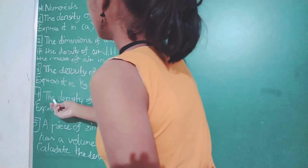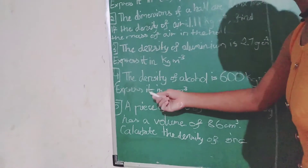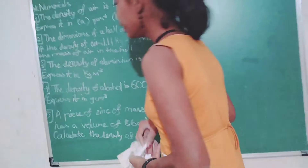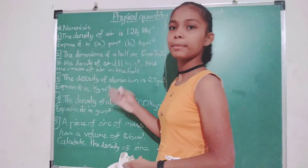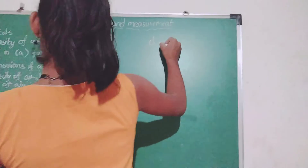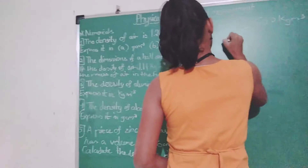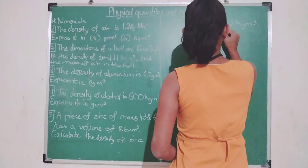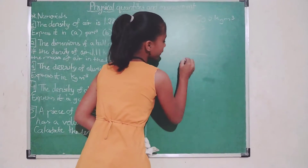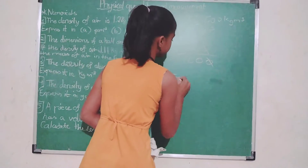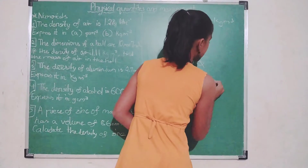The fourth numerical: the density of alcohol is 600 kg per meter cube. Express it in gram per centimeter cube. We divide because we are converting to gram per centimeter cube. So, 600 divided by 1000 gives us 0.60 gram per centimeter cube.